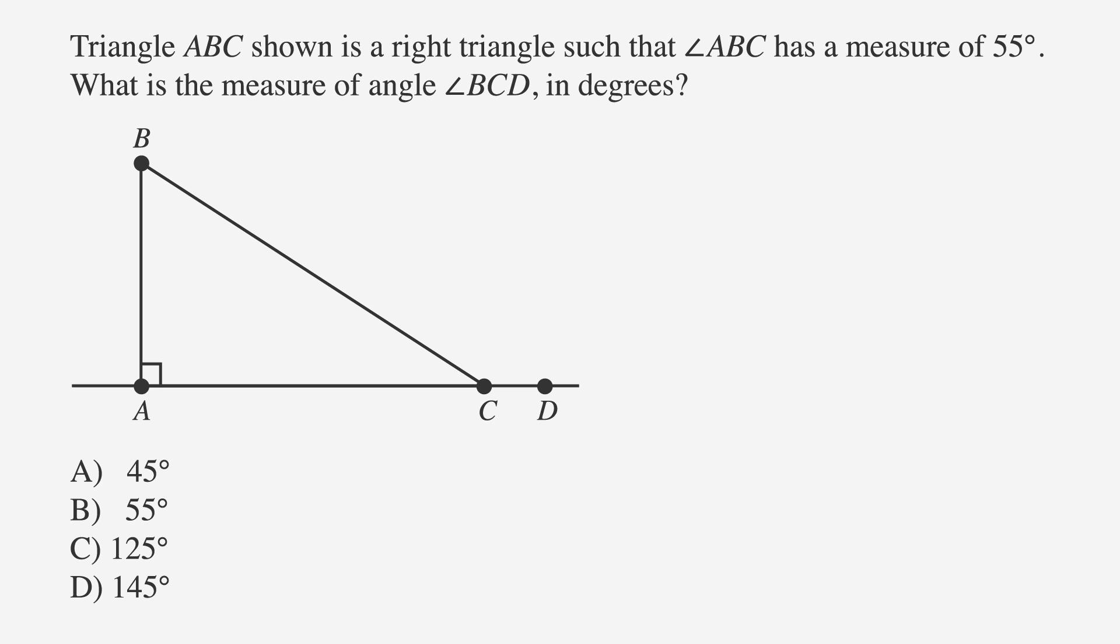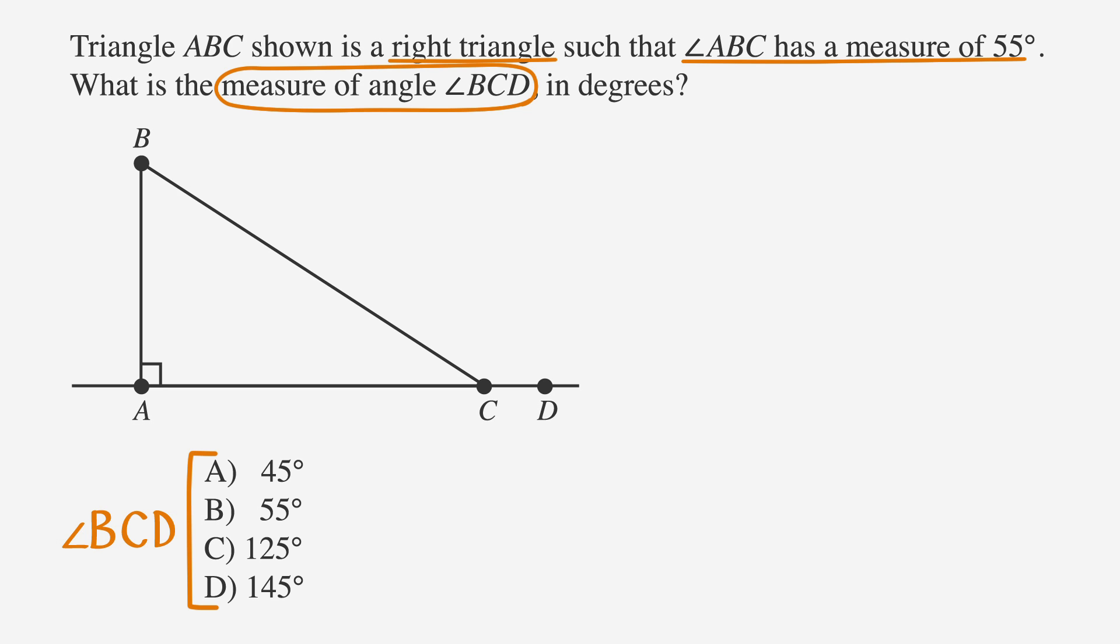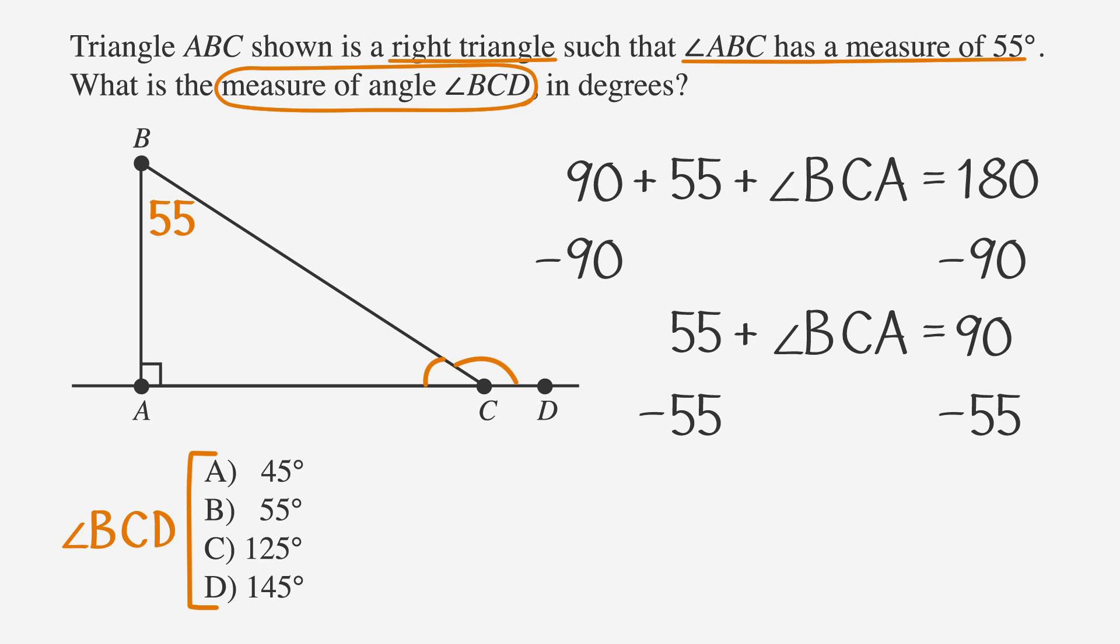And we're back. Did you get answer choice D? If so, awesome. If not, no worries. Let's work through this problem together and make sure we get the same answer. As always, the first thing we should do is underline the facts, circle the key words, and label the answer choices. We're looking to find angle BCD, so let's label that. Let's also label angle ABC, which the question tells us is 55 degrees. Now let's figure out the third angle of the triangle. We know that all three angles of the triangle add up to 180 degrees, so 90 plus 55 plus angle BCA add up to 180. By subtracting 90 from both sides and then subtracting 55 from both sides, we find out that angle BCA equals 35. Let's write that on the picture.